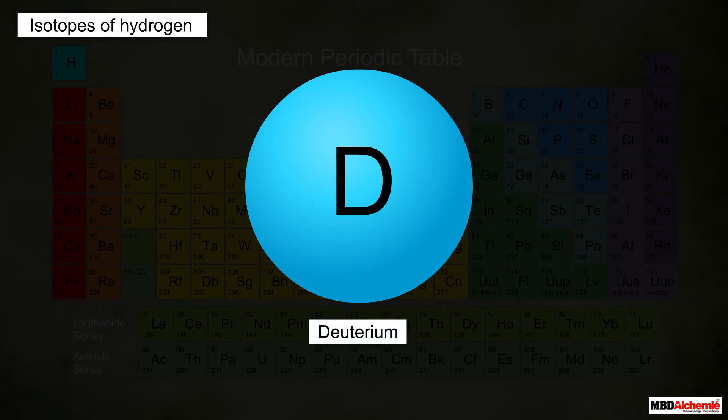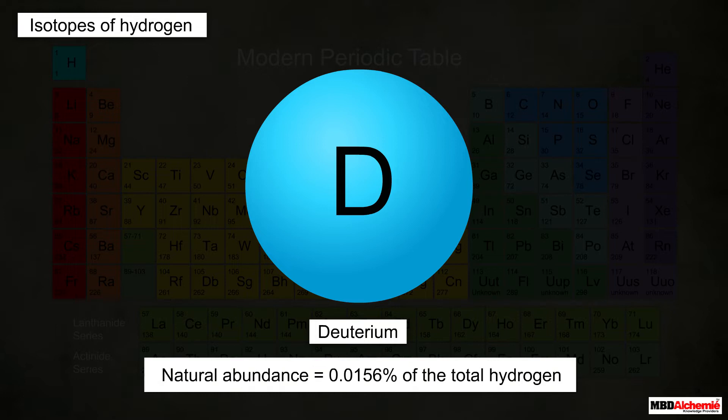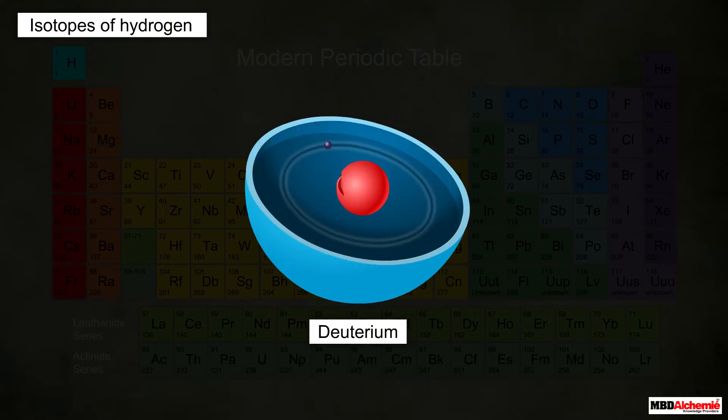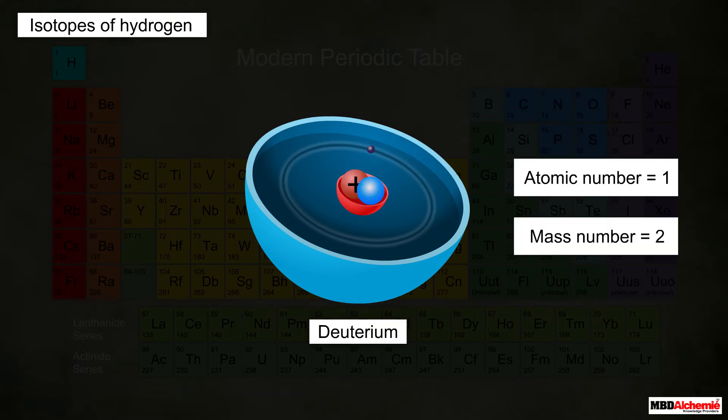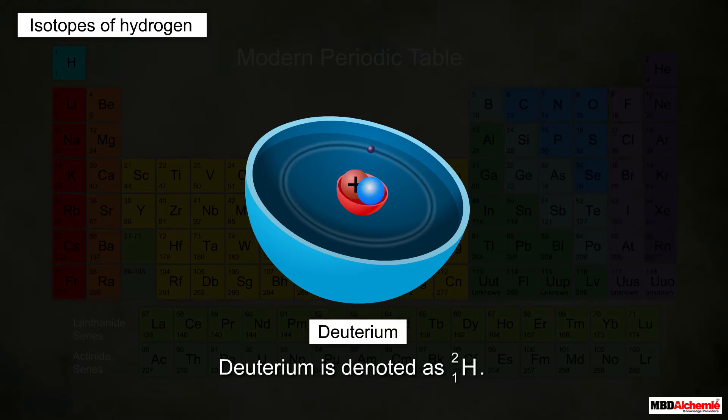The second isotope of hydrogen is deuterium, or heavy hydrogen. It has a natural abundance of 0.0156% of the total hydrogen. An atom of deuterium has one neutron along with one proton and electron. So the atomic number of deuterium is one, but its mass number is two, and is therefore denoted as 1H2.